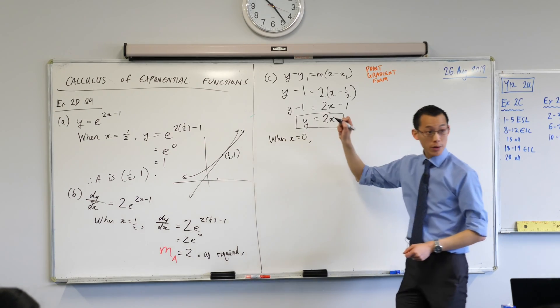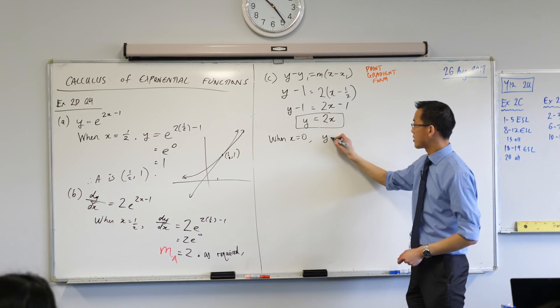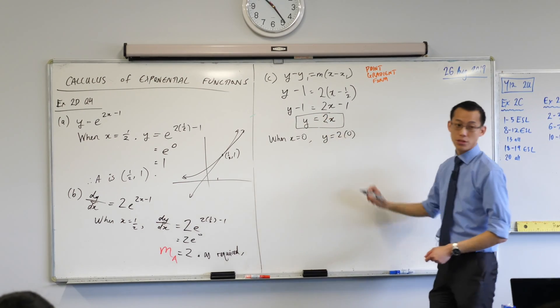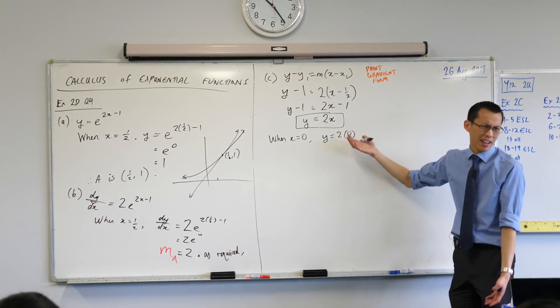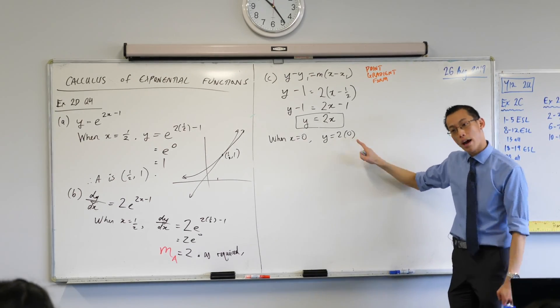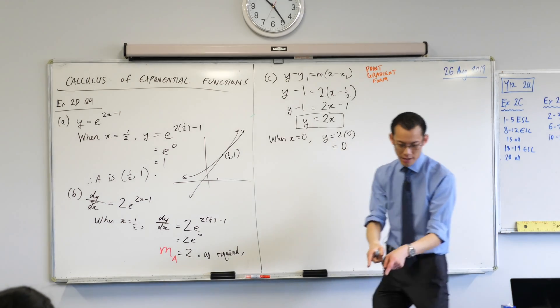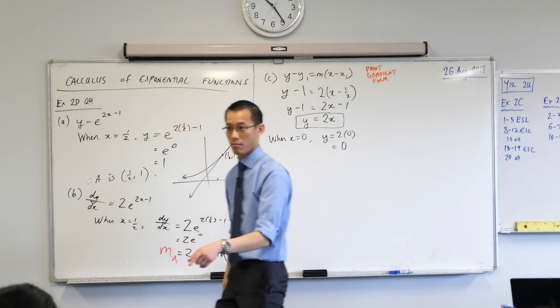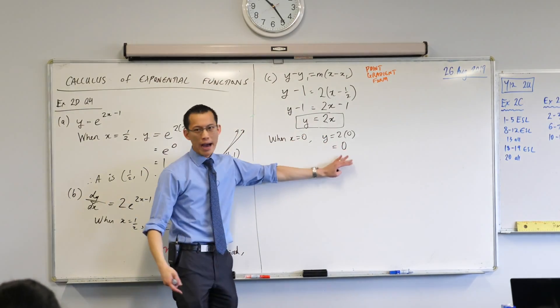When x equals 0, I'm going to do the substitution into this straight line. y is going to be 2 times 0. I know that it's comically trivial to say... I know what 2 times 0 is, right? The reason why I'm including this line and then saying 0 is, the question says hey, prove it.